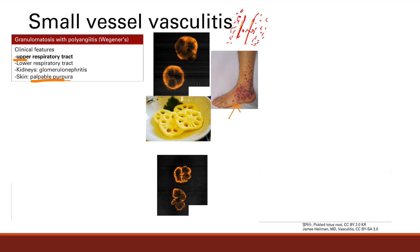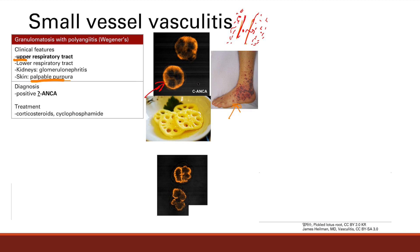The key antibody for diagnosis is C-ANCA. C-ANCA is positive in granulomatosis with polyangiitis. You can remember it as the one that looks like a lotus root. Treatment is steroids and cyclophosphamide.